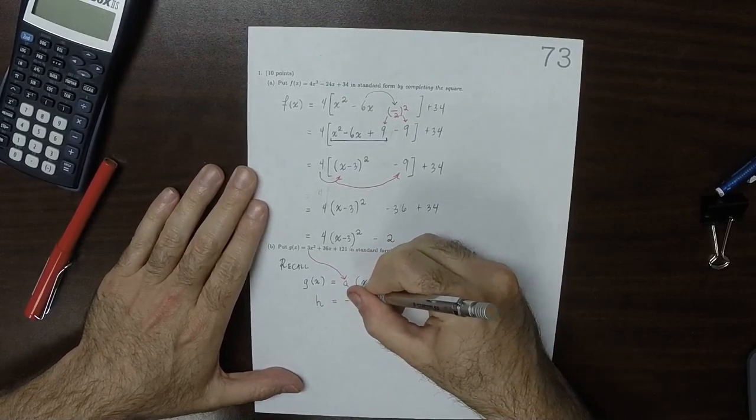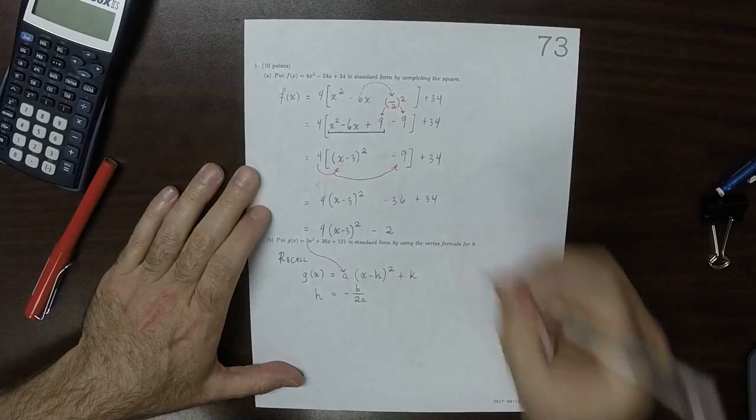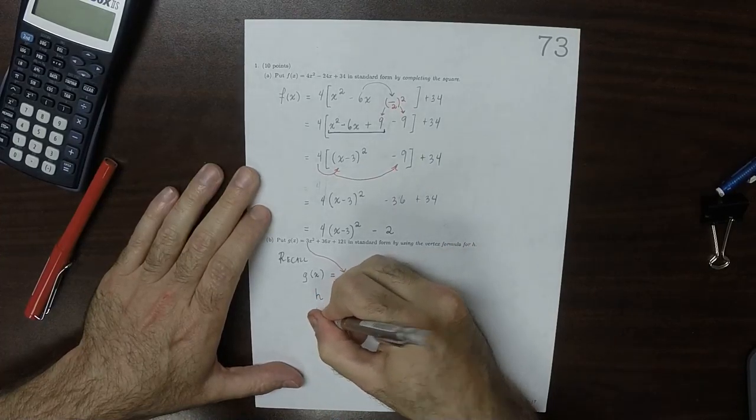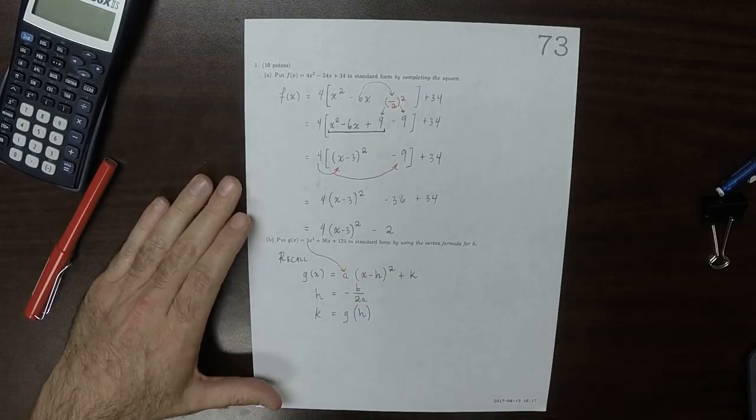h is the formula negative b over 2a. That's the vertex formula, and then k is you take g and plug in h, whatever that happens to be.